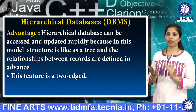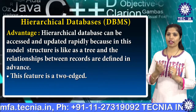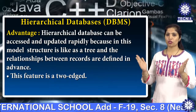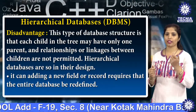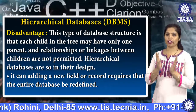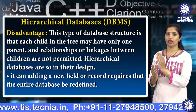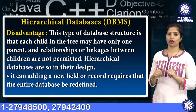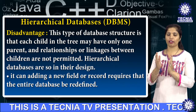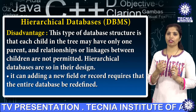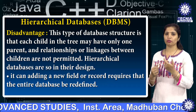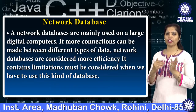The advantages of the hierarchical database are that it can be accessed and updated rapidly because the model structure is like a tree and the relationships between records are defined in advance. The disadvantage is that each child in the tree may have only one parent, and relationships or linkages between children are not permitted even if they make logical sense. Adding a new field or record requires the entire database to be redefined, which is why hierarchical databases are not normally used.